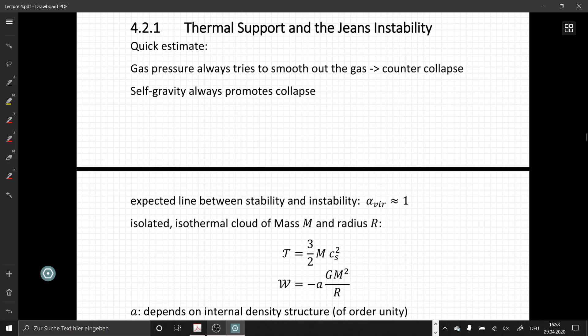Self-gravity, on the other hand, always works in favor of collapse. And we saw that we have a line between stability and instability at a virial ratio of about 1.